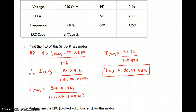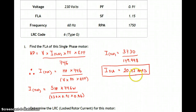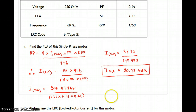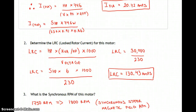So we have 5 horsepower — each horsepower is 746 watts — divided by our voltage 230 times 0.91 times 0.86. That gives us 3,730 over 179.998. The full load current for this 5 horsepower motor is 20.72 amps when running at 230 volts. That's the full load current when it has the maximum load on it.